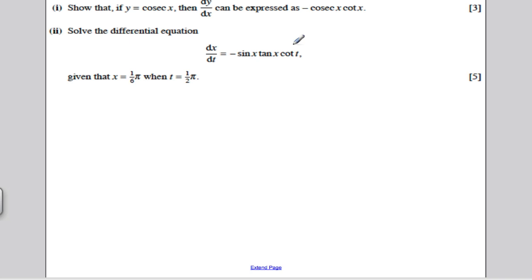How will I do that? Divide both sides by minus sine x tan x and multiply both sides by dt and then integrate. Here we go. I would get one divided by minus sine x tan x, dx. And that would all be equal to cot t dt.